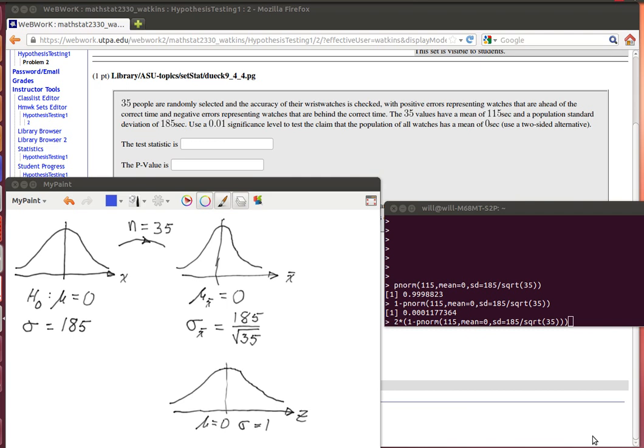We're looking at problem number two from hypothesis testing one in WebWork. Here's the situation: people are looking at watches. Of course, a watch usually runs a little bit faster or a little bit slow.